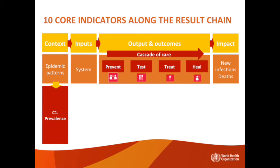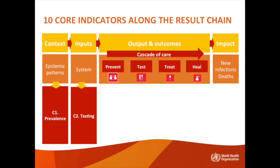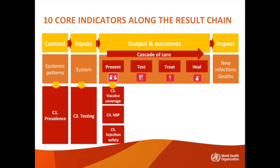C1 is about the prevalence of HBV and HCV infection. C2 is about the infrastructure for biomarker testing. Prevention indicators between C3 and C5 include vaccine coverage for hepatitis B, needle and syringe distribution, and healthcare injection safety.